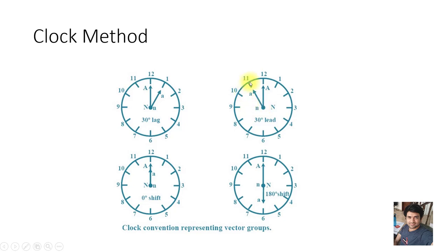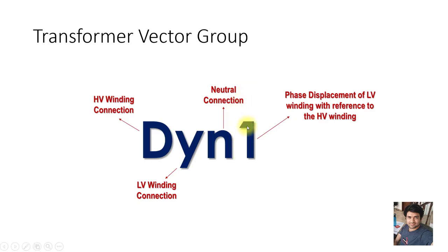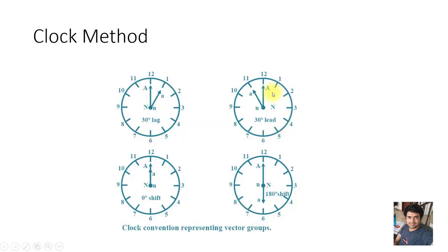For DY1, the number '1' shows a phase shift of 30 degrees between the primary and secondary winding. The secondary winding voltage is shifted by 30 degrees. '1' means the phase shift at the secondary will be 30 degrees lagging.